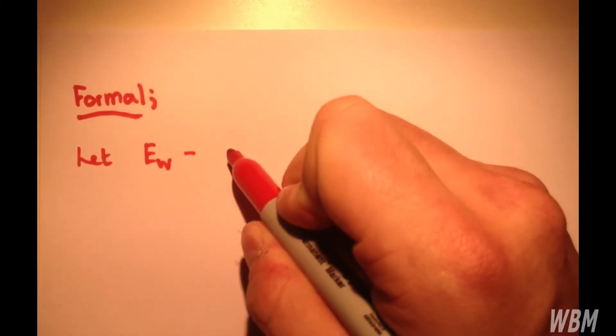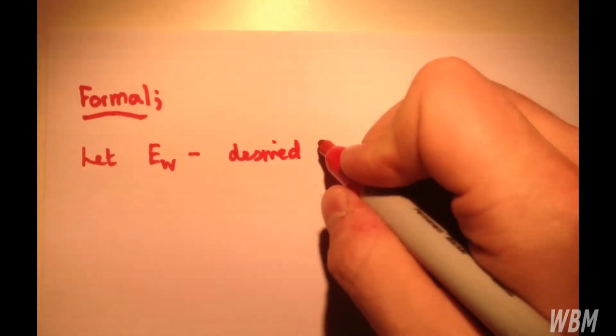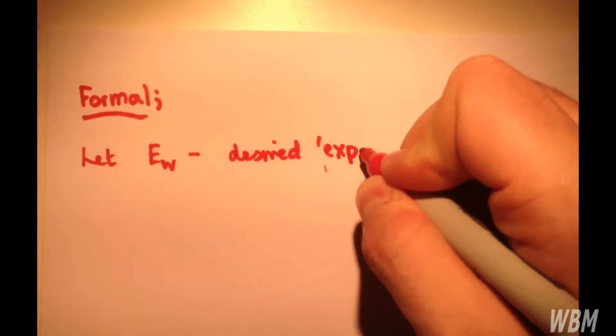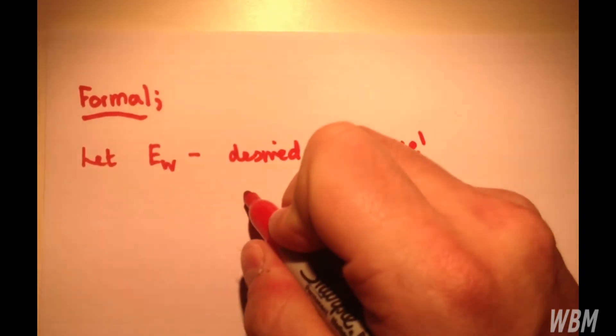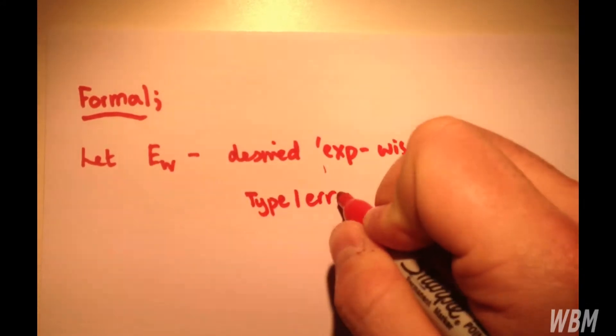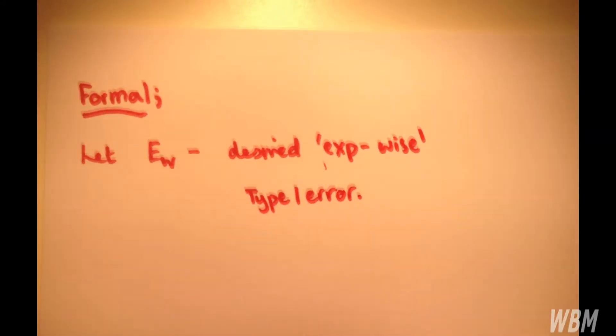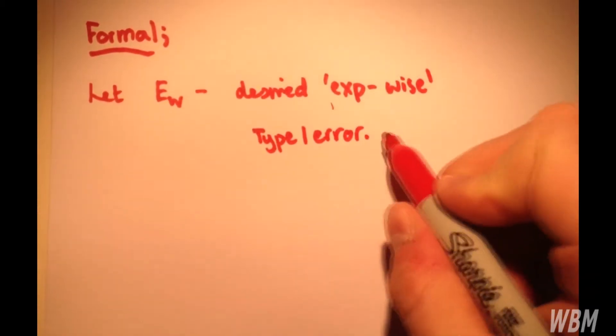so desired experiment-wise risk of type 1 error, which in normal cases, of course, alpha.